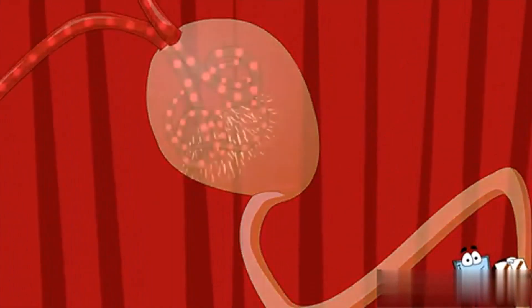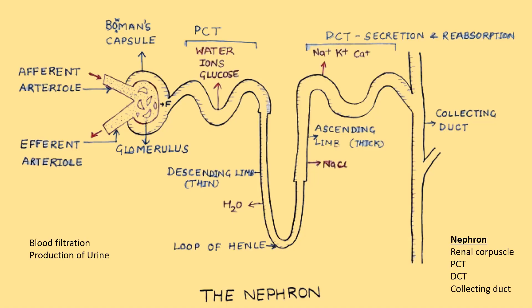Nephrons: the nephron is the functional unit of the kidney, responsible for filtering blood and producing urine. It consists of several distinct structures, each with specific functions. Here's an overview of the structure and function of the nephron.